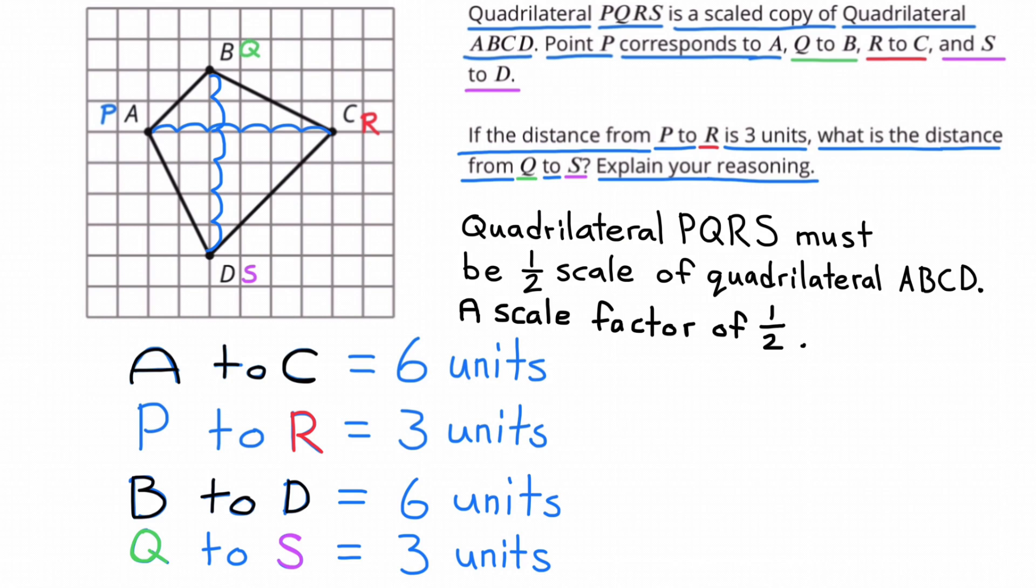Quadrilateral PQRS must be a half scale of quadrilateral ABCD. That would be a scale factor of one half. That's why A to C is 6 units, and P to R is 3 units. B to D is 6 units, and Q to S is 3 units.